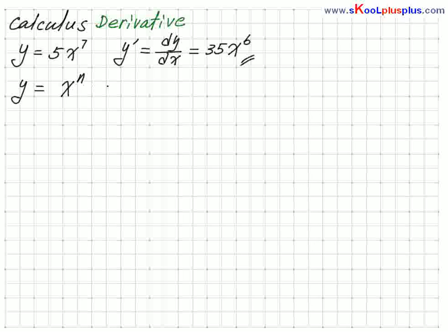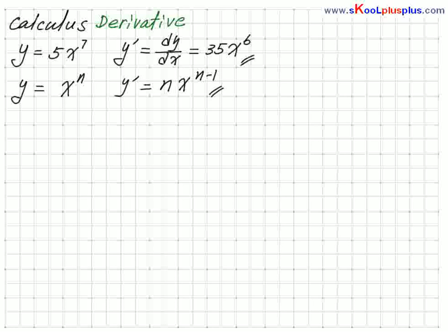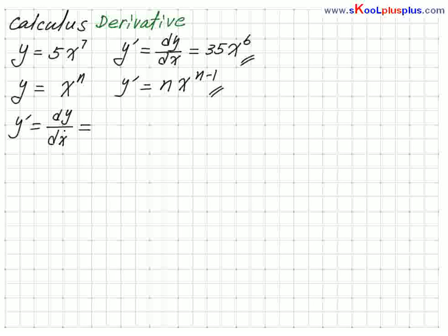In general, the derivative is: n goes to the front, then x to the n minus 1. So easy. The derivative is actually dy/dx.